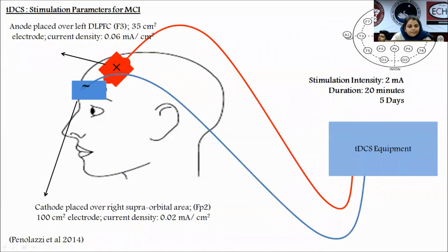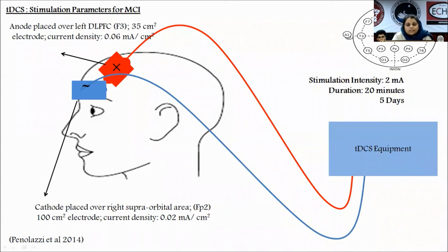For mild cognitive impairment: the anode is placed over the left dorsolateral prefrontal cortex using a 35 cm² electrode with current density 0.06 mA/cm², and cathode over the right superorbital area using a 100 cm² electrode with current density 0.02 mA/cm². Stimulation intensity is 2 mA, duration 20 minutes, for five days.